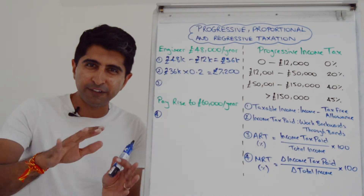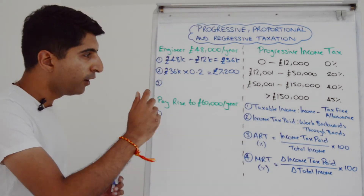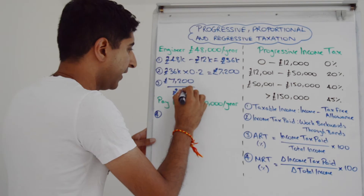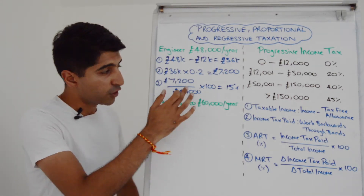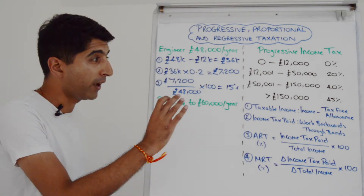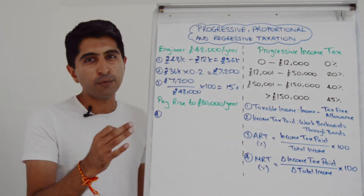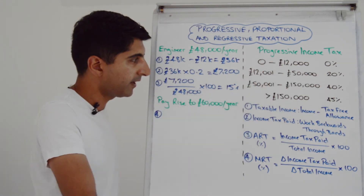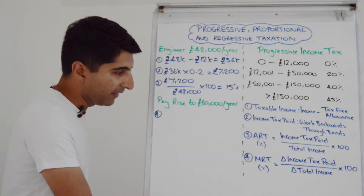Then you might need to work out the average rate of tax. The equation is: total income tax paid divided by total income, times 100. For this engineer: £7,200 divided by £48,000 times 100 gives 15%. So 15% of the engineer's total income is going to the government in income tax. It's 15% and not 20% because the engineer still receives the £12,000 tax-free allowance — the first £12,000 is tax-free, which knocks the figure down. Of the income that is taxed it's at 20%, so the result is close to 20% but not exactly 20%.